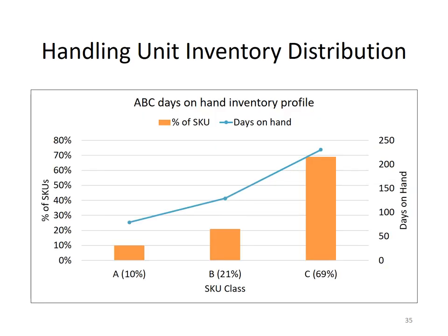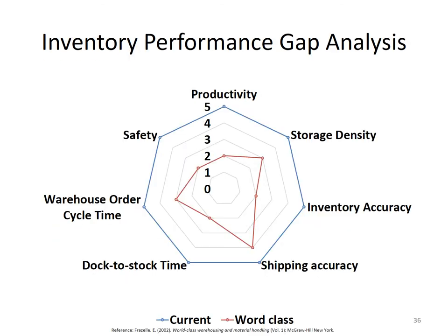We may either remove C items, keep them in a dense storage area, or store C items — which contribute less to sales revenue — on the second and third floor of the mezzanine. In terms of stock keeping units and days-on-hand inventory, we can also plot that inventory profile and it gives us similar insights.